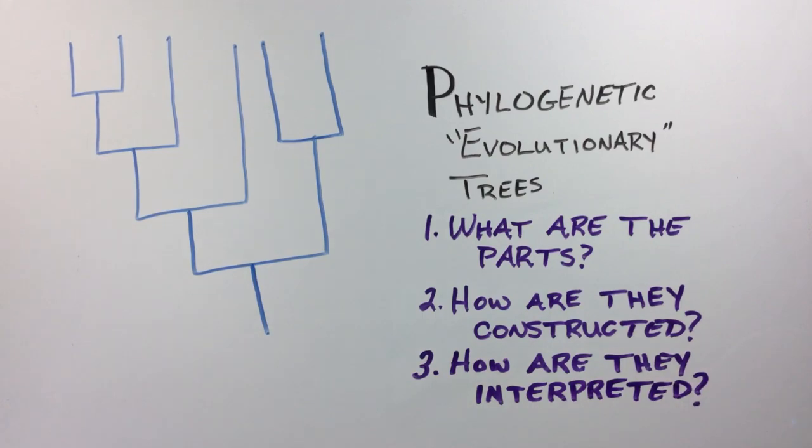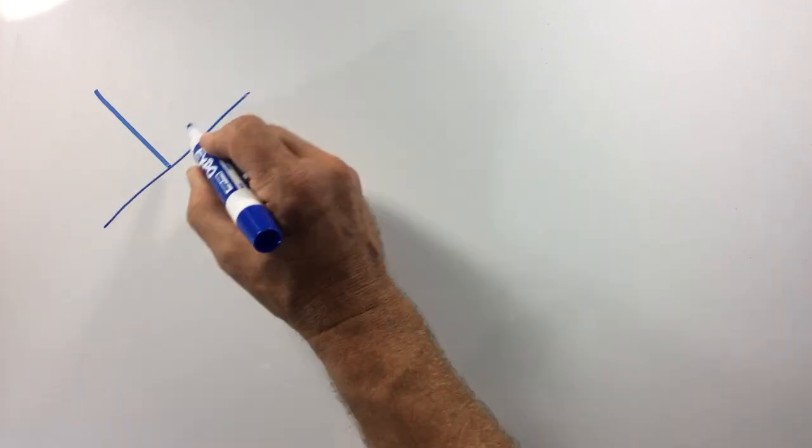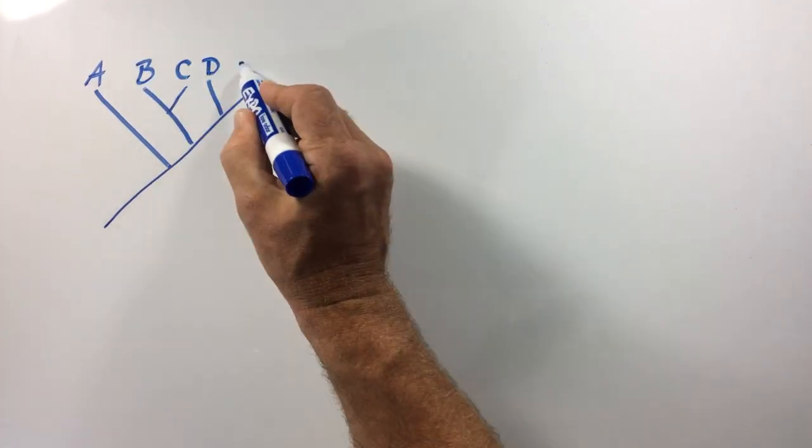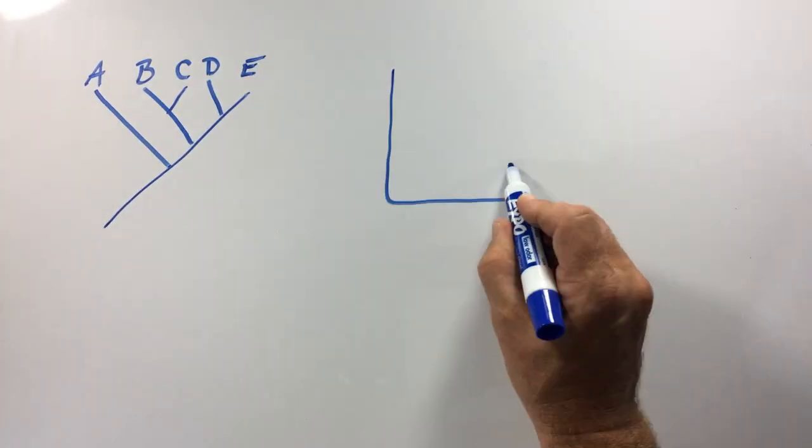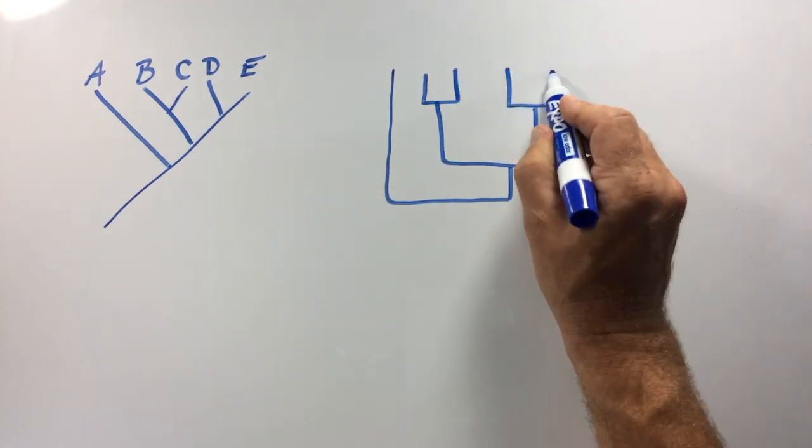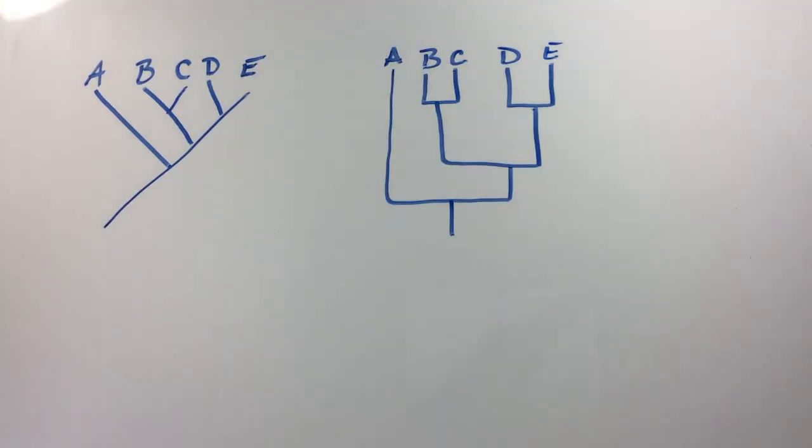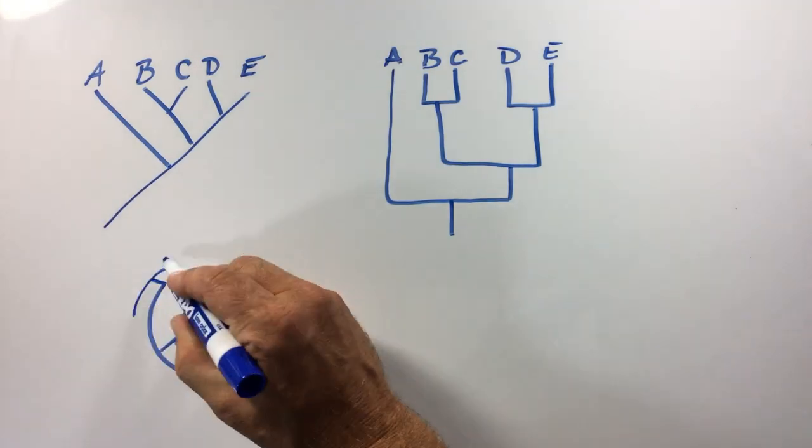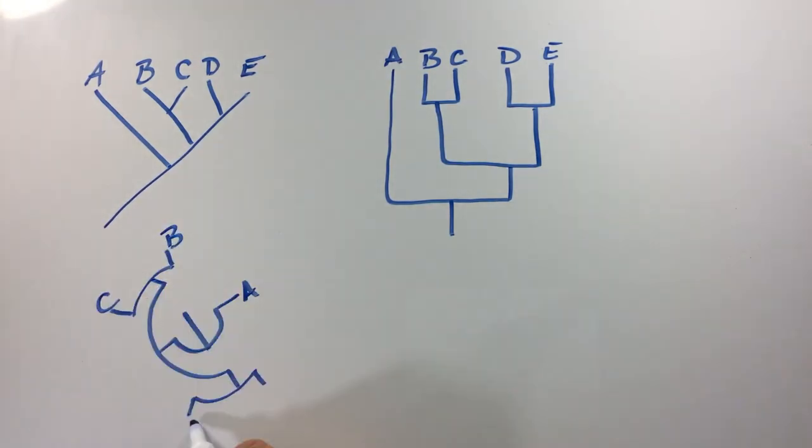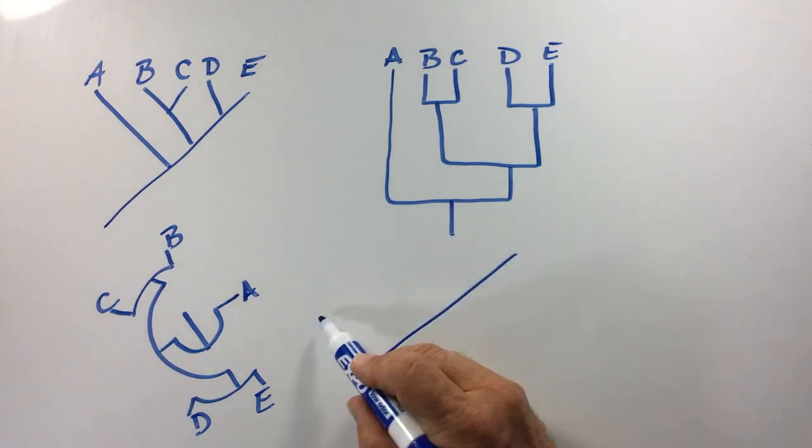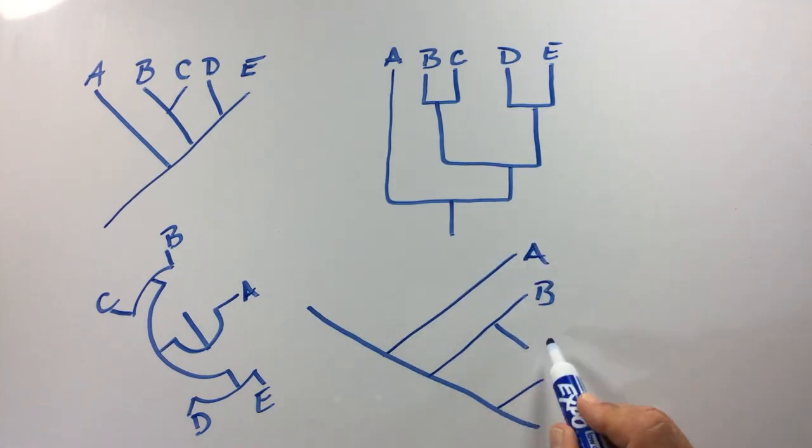Although phylogenetic trees can be used for any taxonomic group, species will be used in this video for clarity. To begin with, phylogenetic trees can be drawn a number of different ways, whether sloped with angled branches or even showing a slightly circular type of diagram. These phylogenies all show the same relationship among the species A through E because they have the same branching pattern. You can even draw the phylogeny with a different angle of orientation and it still shows the same relationships among these species.